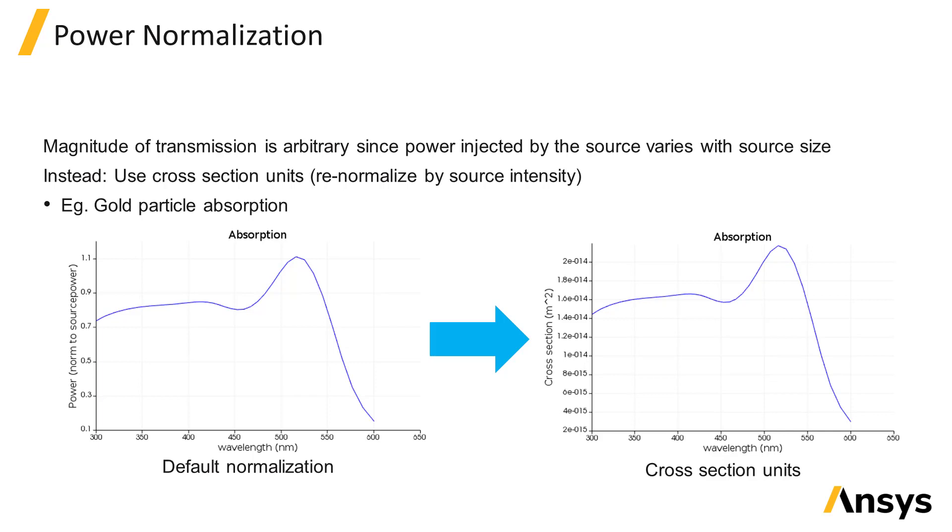This is also known as cross-section units. Cross-section units are usually used in MIE scattering simulations to get the absorption, scattering, and extinction cross-sections.